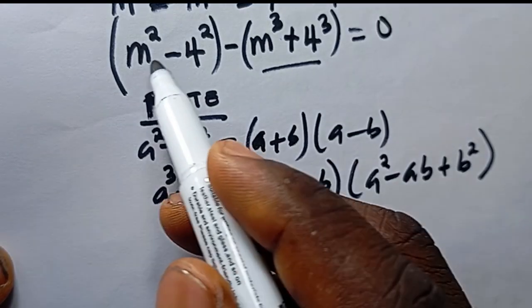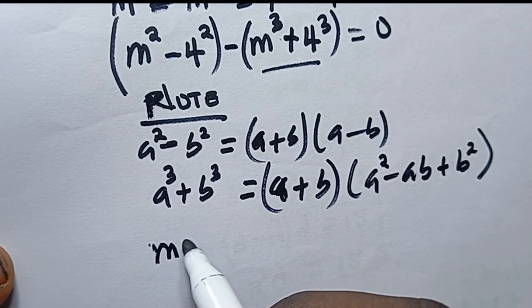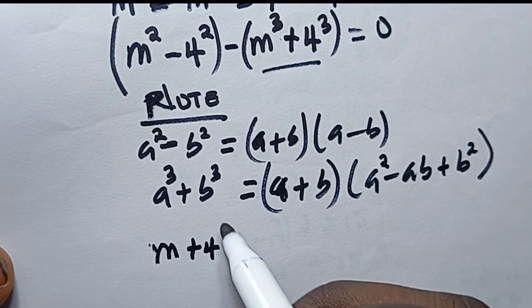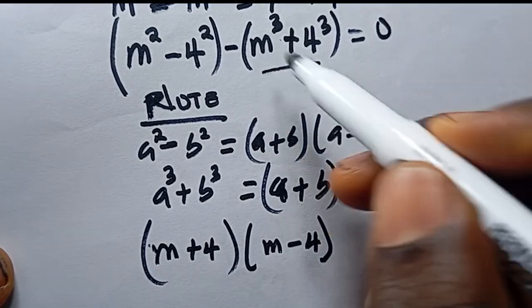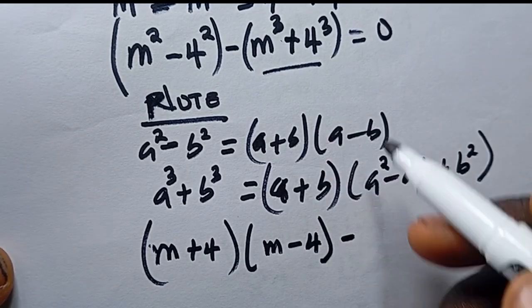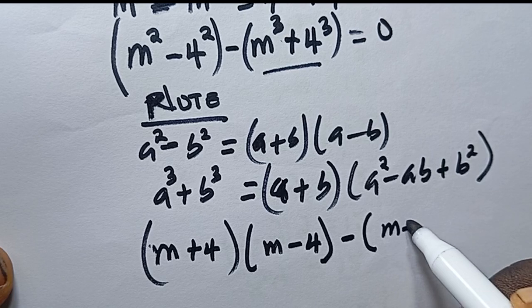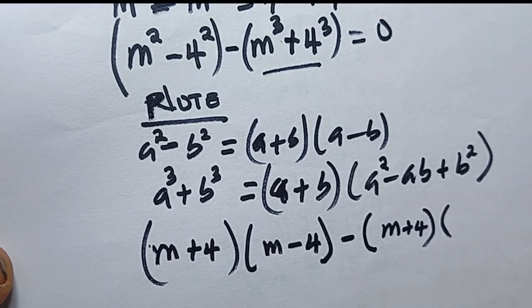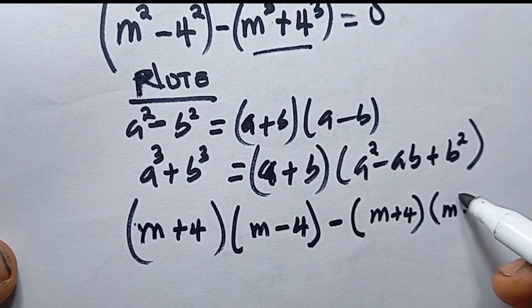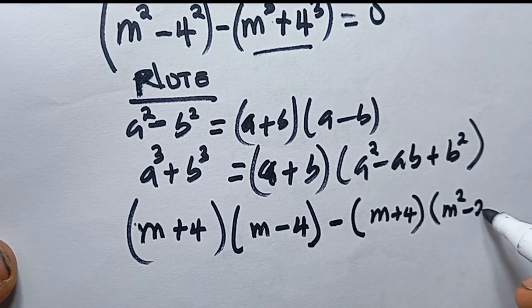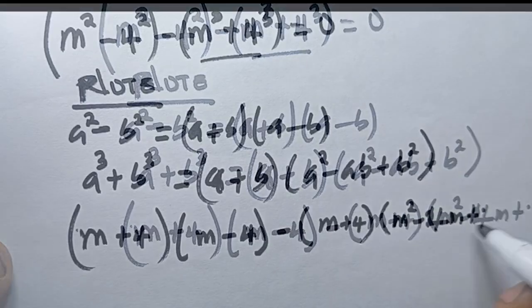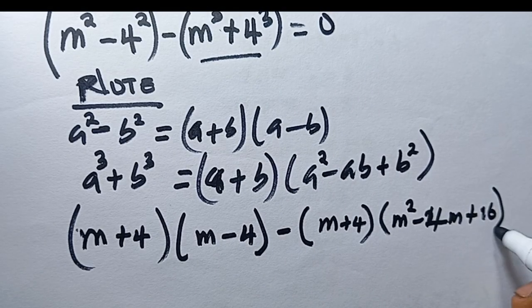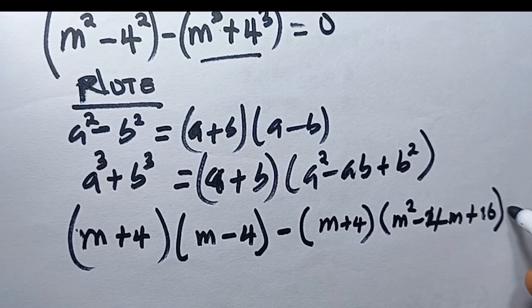Expanding the first bracket, the difference of squares m² minus 4², I get (m + 4)(m − 4). Expanding the second bracket, the difference of cubes m³ minus 4³, I get (m + 4) times (m² minus 4m plus 4²), which is (m + 4)(m² − 4m + 16). This whole expression is equal to 0.